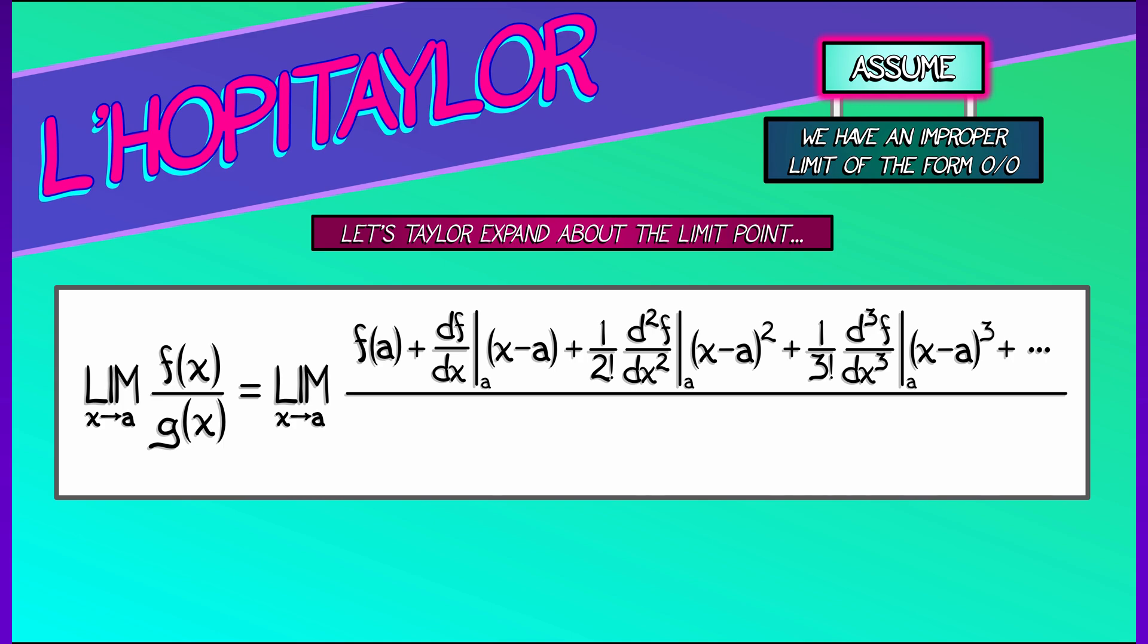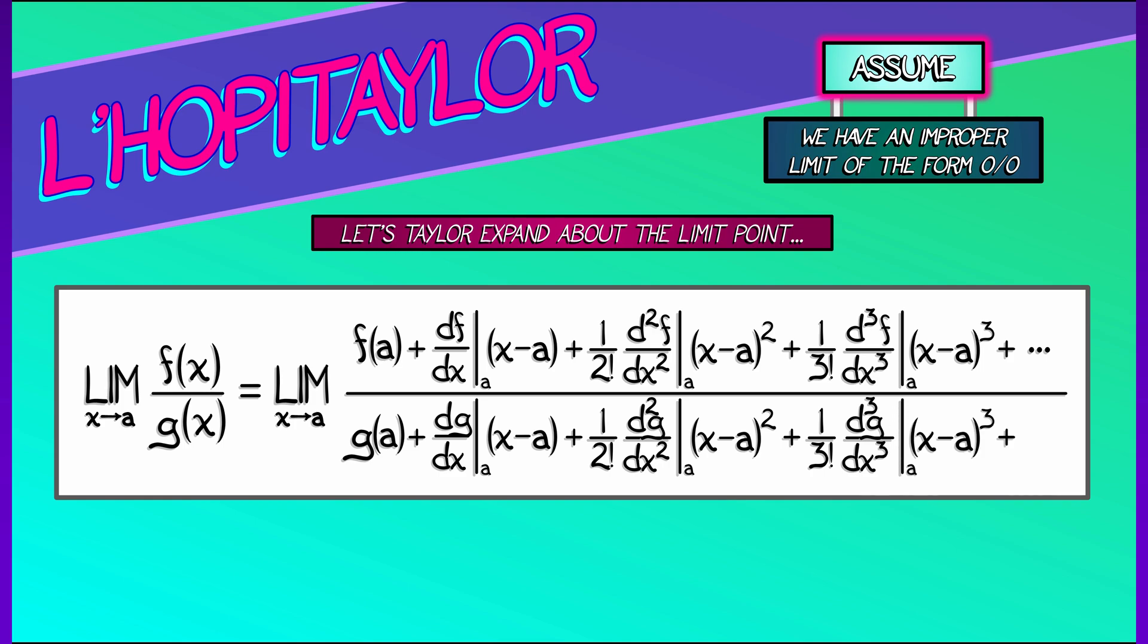Do the same thing for the denominator for g(x). Beginning with g(a), then the first derivative times (x - a), then 1 over 2 factorial times the second derivative times (x - a) squared. Keep going.